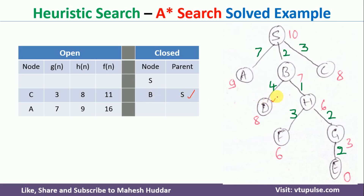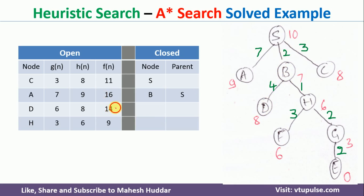Exploring B, we have two successors: D and H. f(D) = g(D) + h(D) = (2+4) + h(D) = 14. For H: g(H) = 2+1 = 3, h(H) = 6, f(H) = 9. Sorting in increasing order, H comes first, so we select H and place it on the closed list.